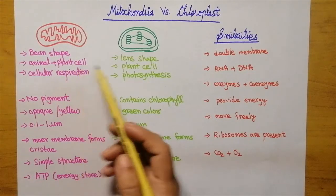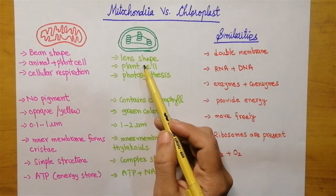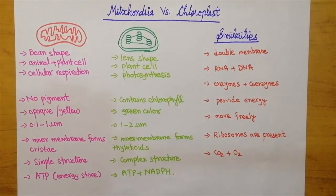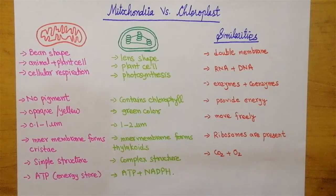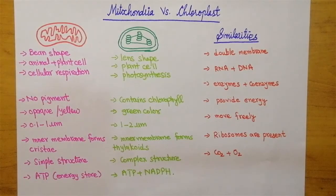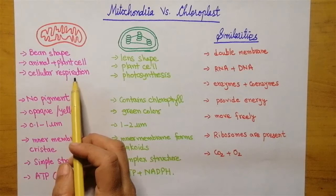The mitochondria is present in animal and plant cells, while the chloroplast is only present in plant cells — it is absent in animal cells. This is because of its function. We know that chloroplast is required by plants to make their own food, while in the case of animals no such process takes place, that's why chloroplast is absent in animal cells.